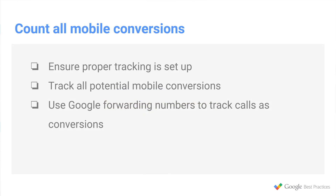So when it comes time to actually measure the value that mobile users derive from you and your site, ensure that proper tracking is set up — a basic setup thing, but really important. Track all of the potential mobile conversions. Be sure that you're capturing anything that you offer. And finally, use Google forwarding numbers to track calls as conversions. So when we're talking about the full value of mobile, those are some things to keep in mind. Please check out the rest of our video series for some other smartphone tips.